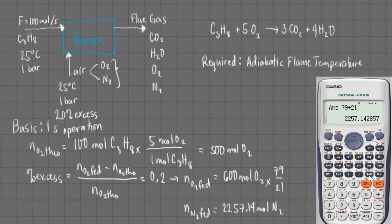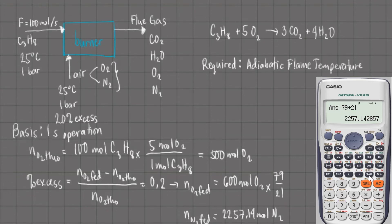For the next part, we have to solve for the amounts of components in the flue gas. Let us represent CO2 as N1, water as N2, excess oxygen as N3, and excess nitrogen as N4.